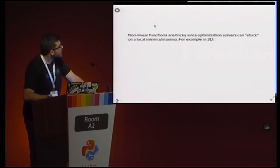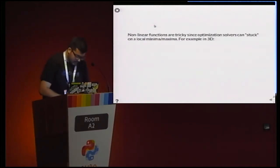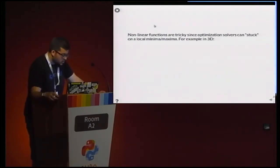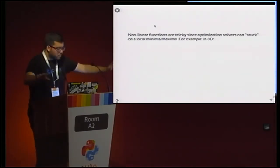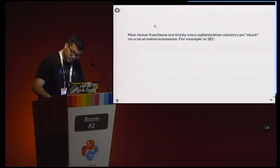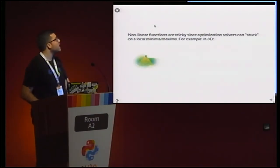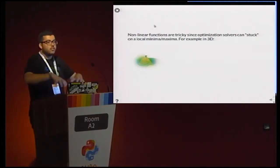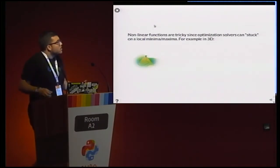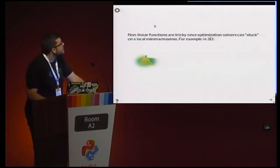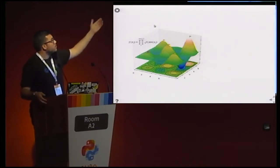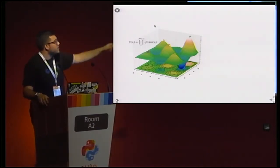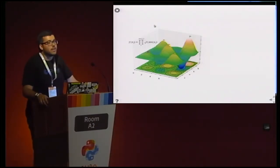This is very important. When you are solving this type of problem, you don't actually know the value of all the points in your function. It's like being in a fog-covered mountain where you only have information about the nearest region. So it could be possible that you are not at the global optimum.